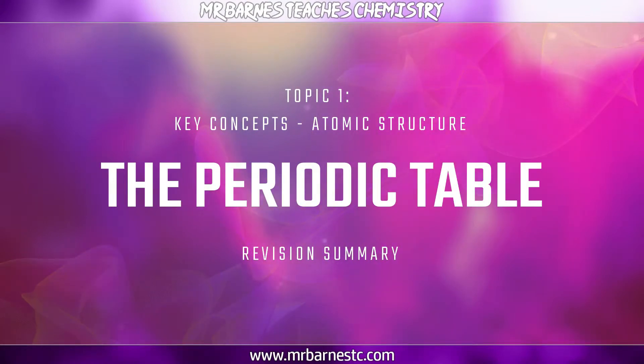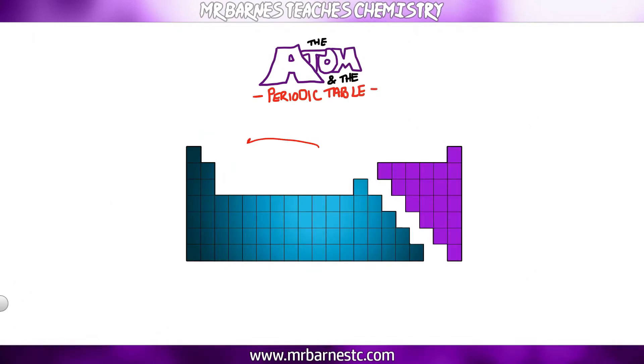So there are a few things that you need to know about the periodic table. Number one being metals are on the left of our zigzag here and non-metals are on the right, with the exception of hydrogen. Hydrogen is a non-metal, you just need to learn that one.